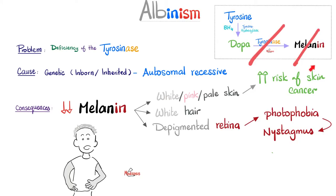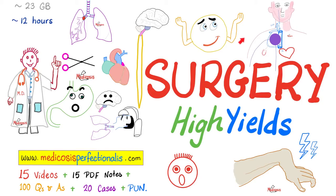Actinic keratosis increases risk of skin cancer — but what type? Squamous cell carcinoma, basal cell carcinoma, or malignant melanoma? Please let me know in the comment section. No melanin means white hair and no melanin in the retina — a depigmented retina cannot protect from light, causing photophobia. Remember that your retina is the beginning of the optic nerve; you cannot see properly, so you are more likely to develop nystagmus.